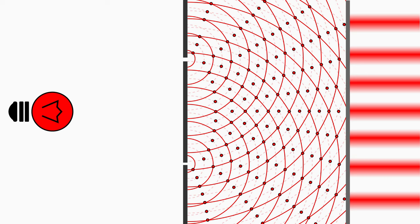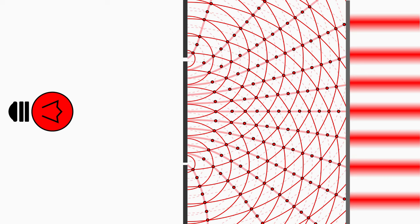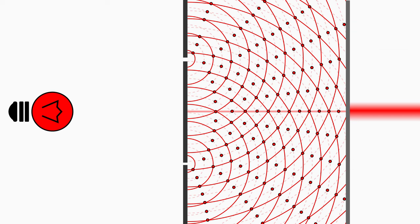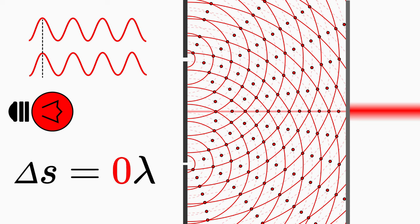If you follow the points of constructive interference up to the screen, you will reach the maxima. The zero order fringe occurs in waves with a path difference of zero, that is m equals zero.